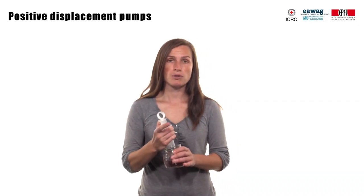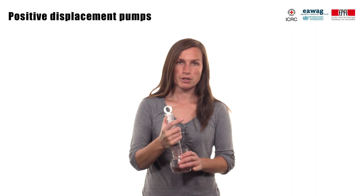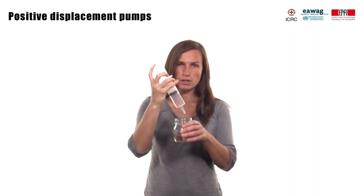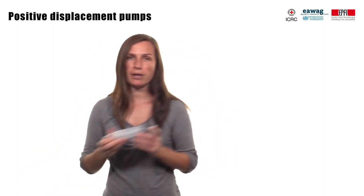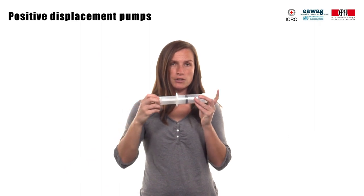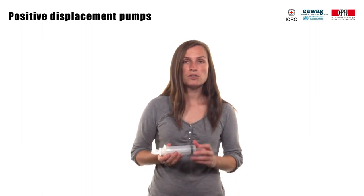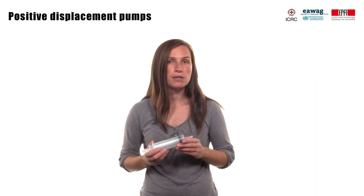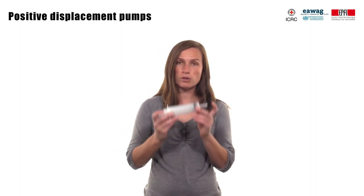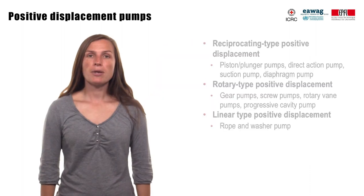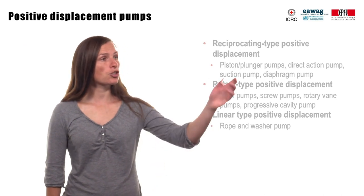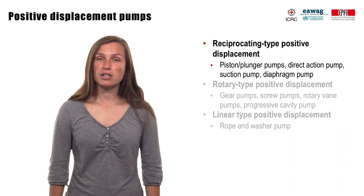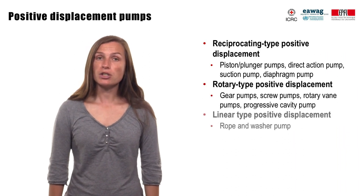A positive displacement pump makes a fluid move by trapping a fixed amount of water and forcing the trapped volume into the discharge pipe. Basically, the pump uses the principle of expanding cavity on the suction side and decreasing cavity on the discharge side. The volume remains constant during one cycle of operation, which means that theoretically positive displacement pumps should produce the same flow when the speed is constant, independently of the pressure on the discharge side. Depending on the type of mechanism used to move water, positive displacement pumps can be classified in three major groups: reciprocating type, rotary type, and linear type positive displacement.